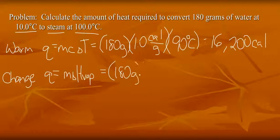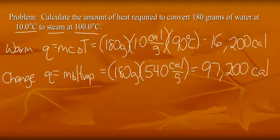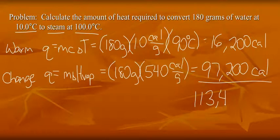180 is the mass. Delta H of vaporization for water is 540 calories per gram. So to change the state will require 97,200 calories. So total energy required 113,400 calories for this process.